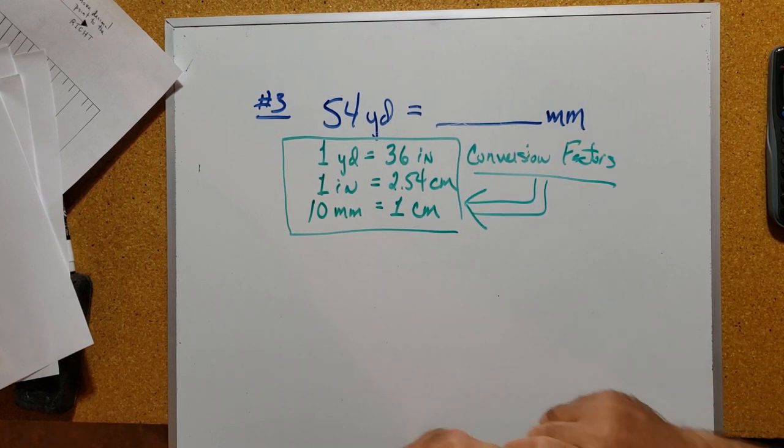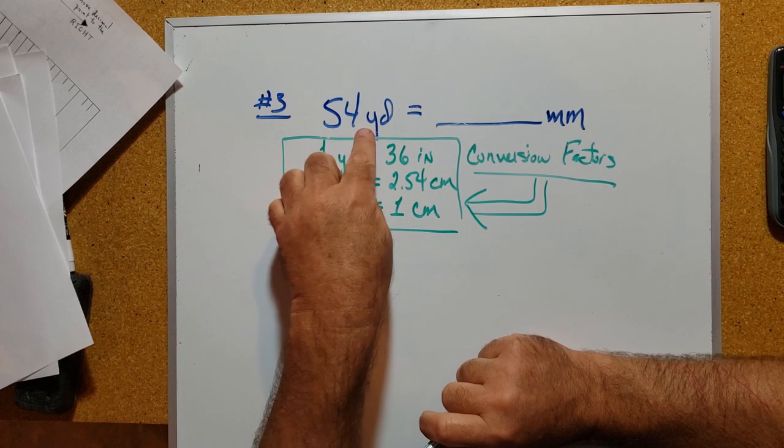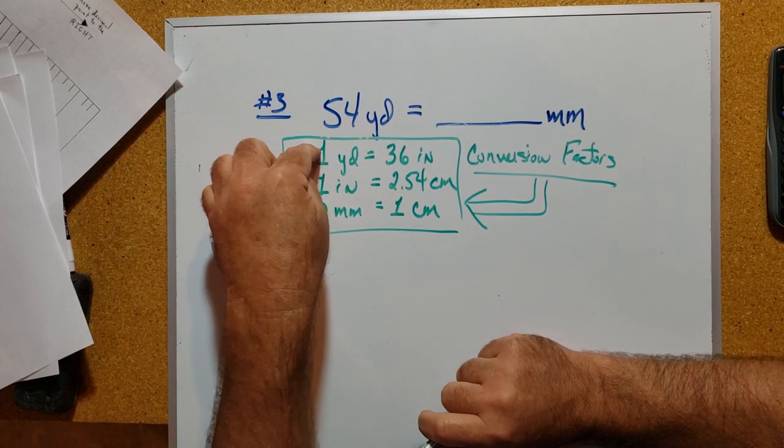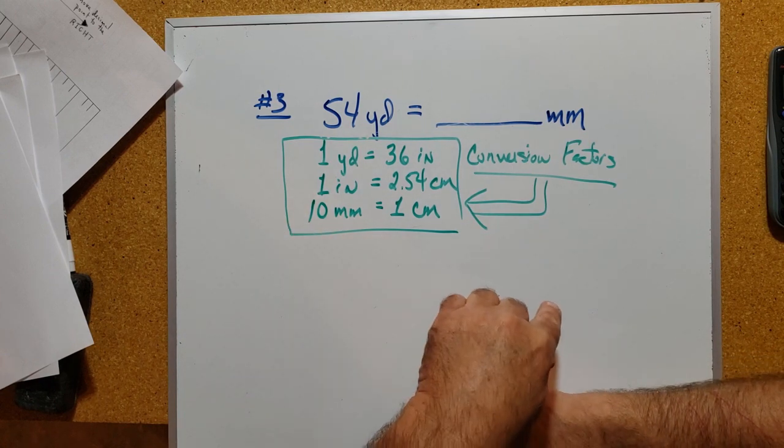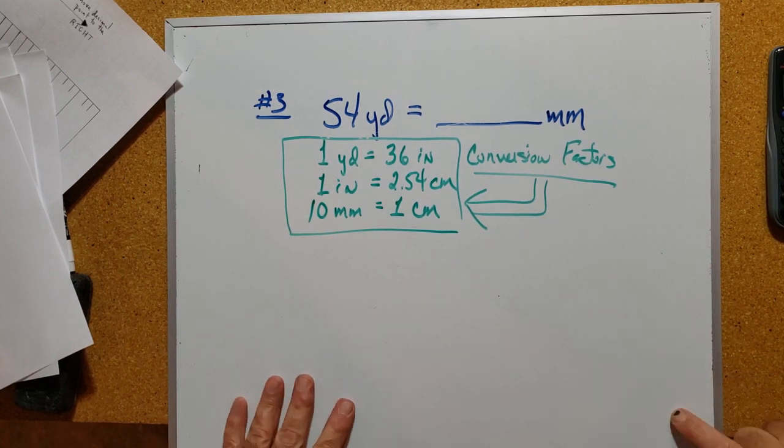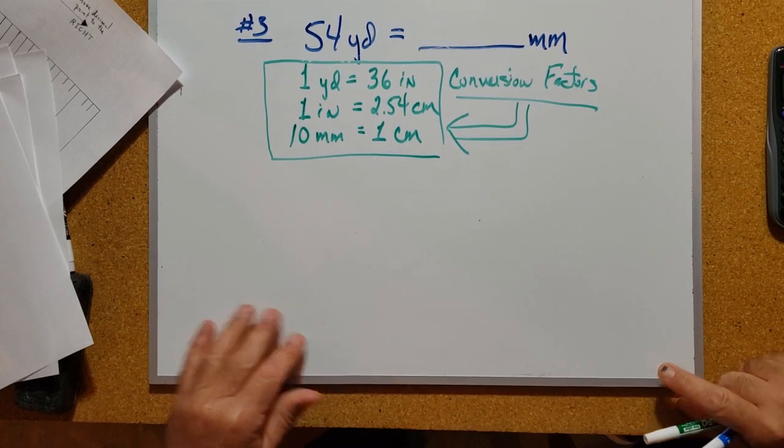That means I'm going to write this 54 yards down as a given, and then there's going to be three conversion factors set up properly following it. Then we could write down the equal sign and get our answer. That's our strategy.